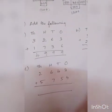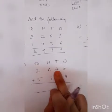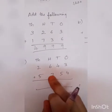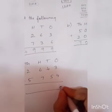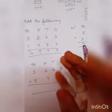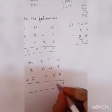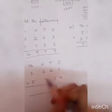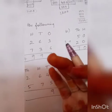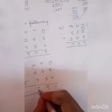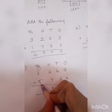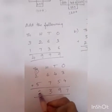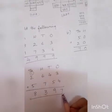C question: 2,643 plus 5,754. Starting from the right: 3 plus 4 is 7. Then 4 plus 5 is 9. Then 6 plus 7 is 13 - write 3, carry 1. Then 1 plus 2 is 3, 3 plus 5 is 8. So 8,397 is your answer. Did you understand how to add all these numbers?